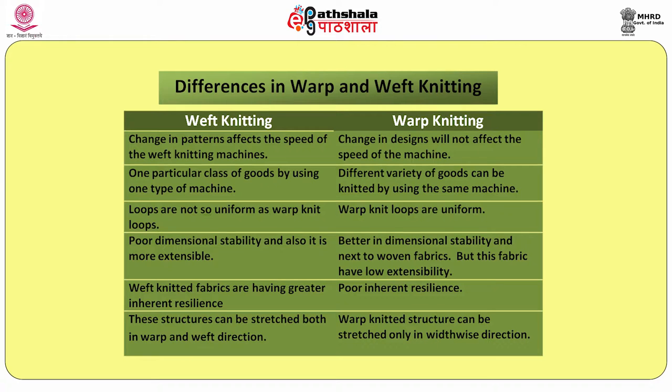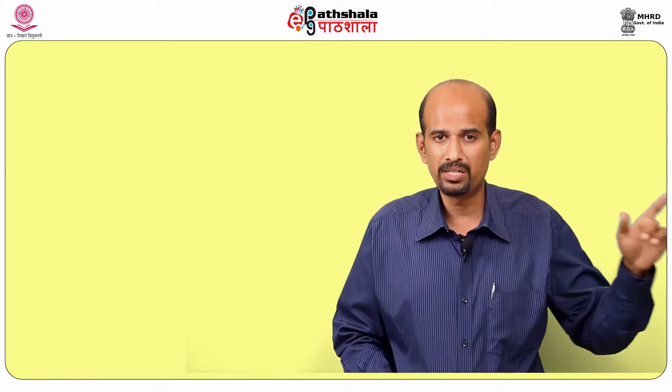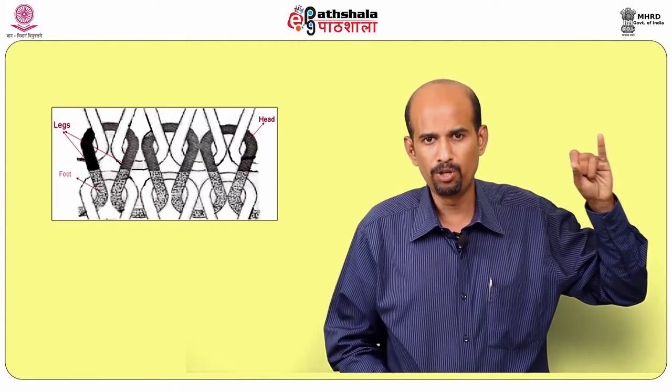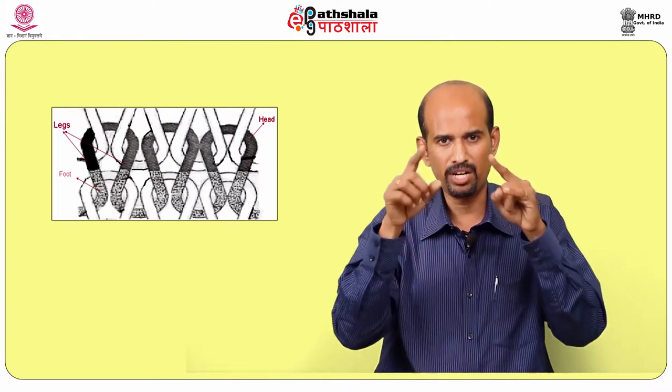Next we will see the terms and principles of weft knitted fabric, classified into fabric terminology and machine terminology. Fabric terminology deals with what happens in the fabric; machine terminology deals with the concept of the machine. Under fabric terminology, we discuss the loop: a loop is an inverted U-shape having two legs and one head. An open loop has a head and a foot (tail) that is open. A closed loop has a head and a foot where the loop is crossed.